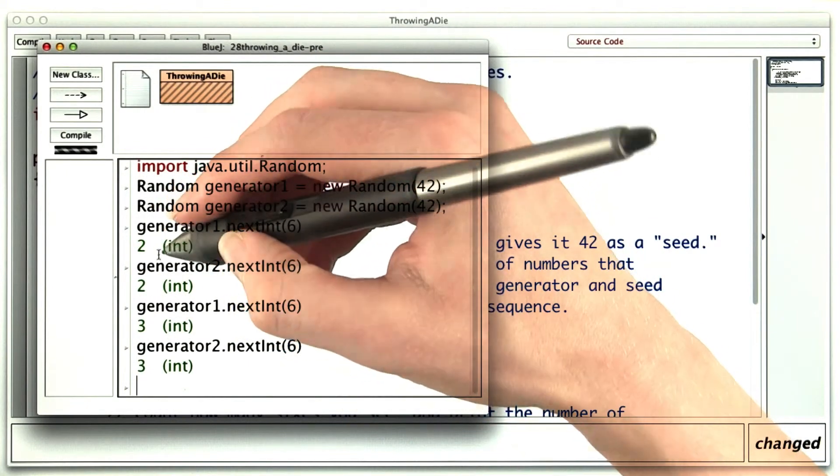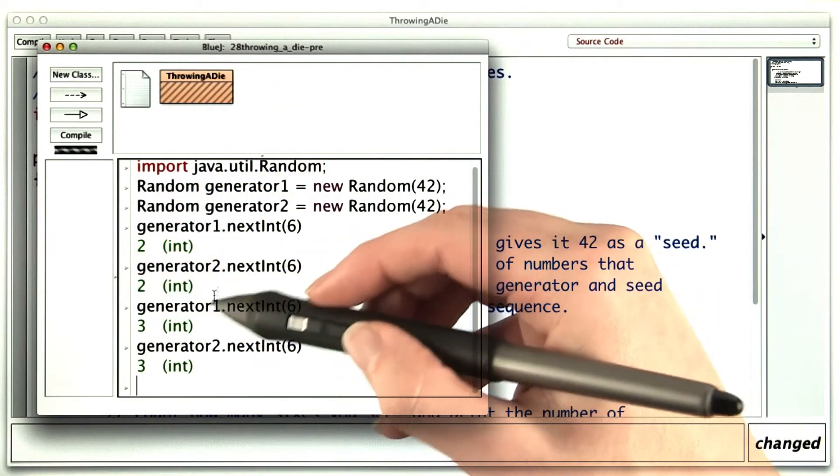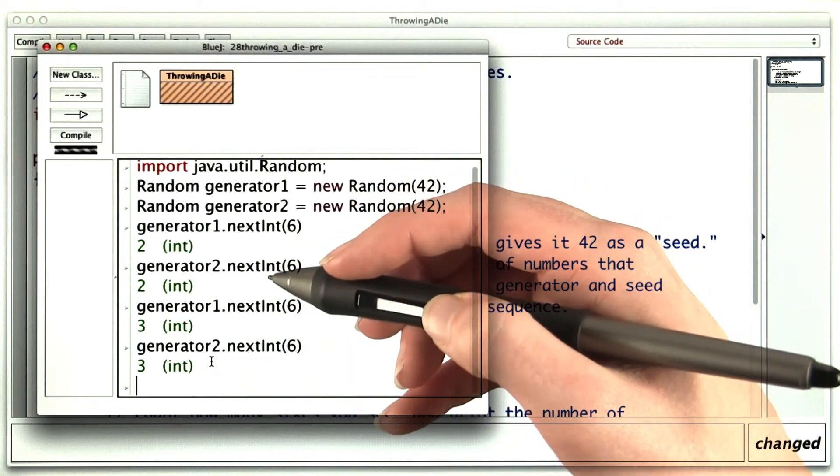So while I'm getting random numbers out of this, the numbers are predictable. So we know what to expect and can help you debug your code.